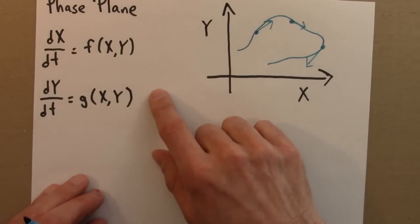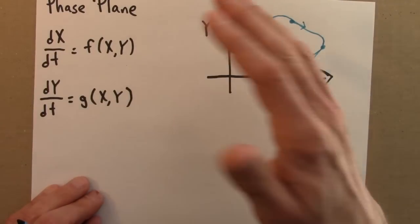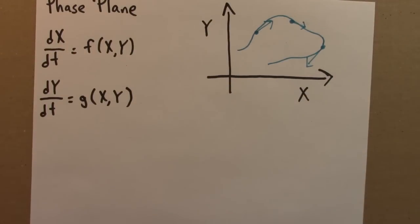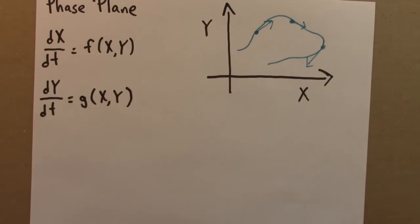So again, the main point is that x and y determine subsequent values of x and y. This is deterministic. So this fact, this fact of determinism, has an important geometric consequence. In particular, it tells us that two curves in phase space...